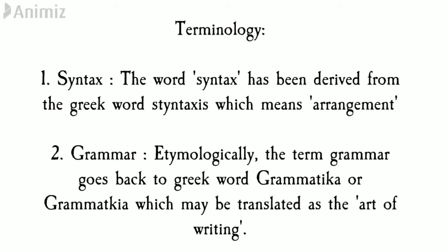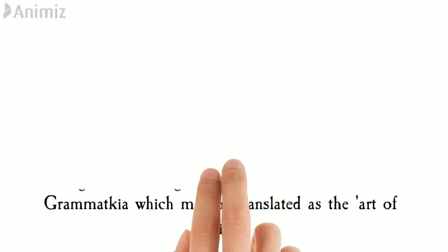The second terminology is grammar itself — a word that has been approached and defined differently by different scholars and schools of linguistics. Etymologically, the term grammar goes back through French and Latin to the Greek word grammatikē, which may be translated as the art of writing. For a long time this term was used to incorporate the whole study of language, but essentially it refers to the art of writing and the rules for constructing sentences.